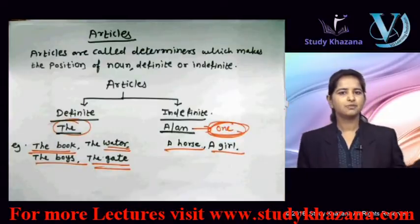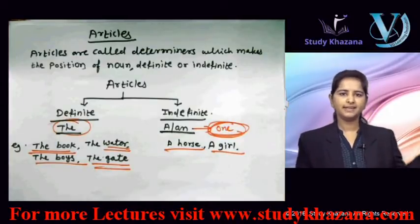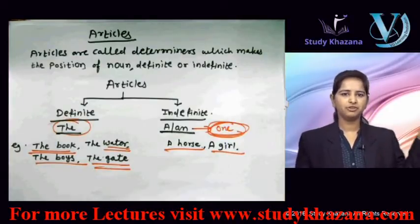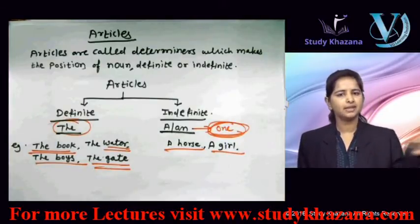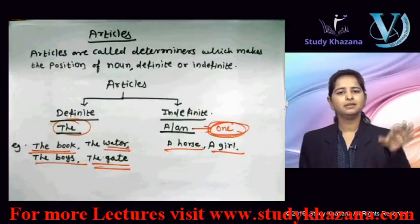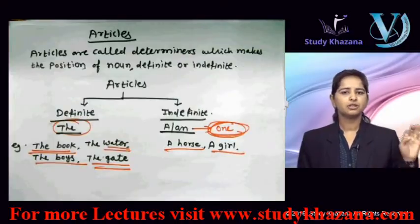'A girl is very beautiful' — any girl. Randomly, if you are talking about any girl — 'a girl will be beautiful.' 'An' ka use hum kahaan karenge? Jab vowel sound ka use ho.